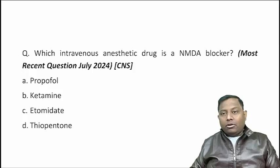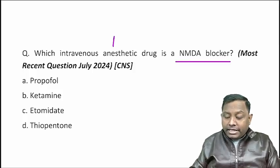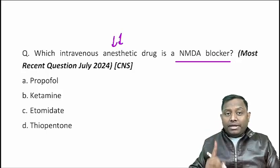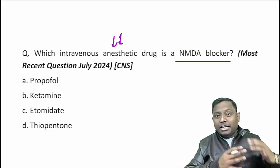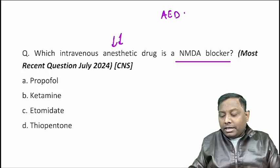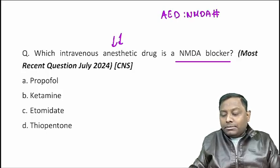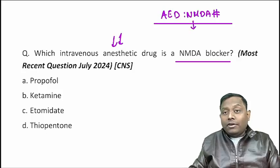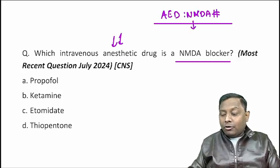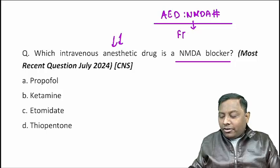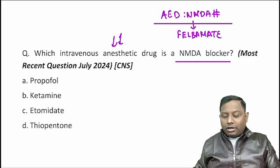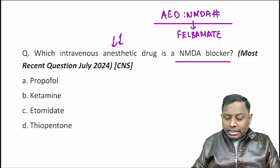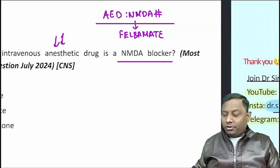Which IV anesthetic drug is an NMDA blocker? Among the anti-epileptics, felbamate is one NMDA blocker — but among the given choices for IV anesthetic agents, the answer is ketamine. Ketamine is the IV anesthetic that acts as an NMDA receptor blocker.